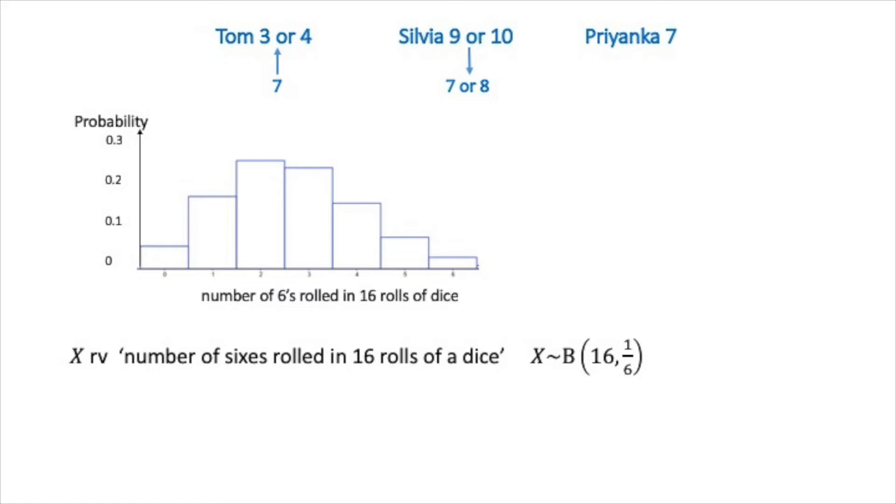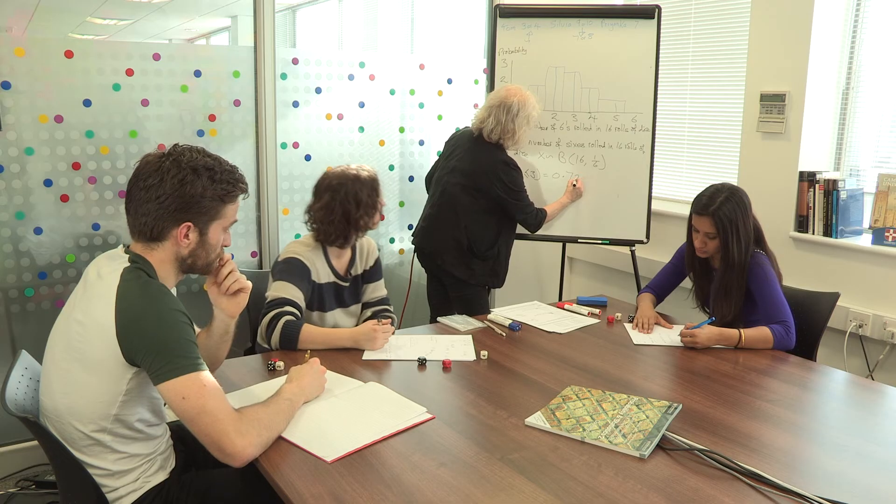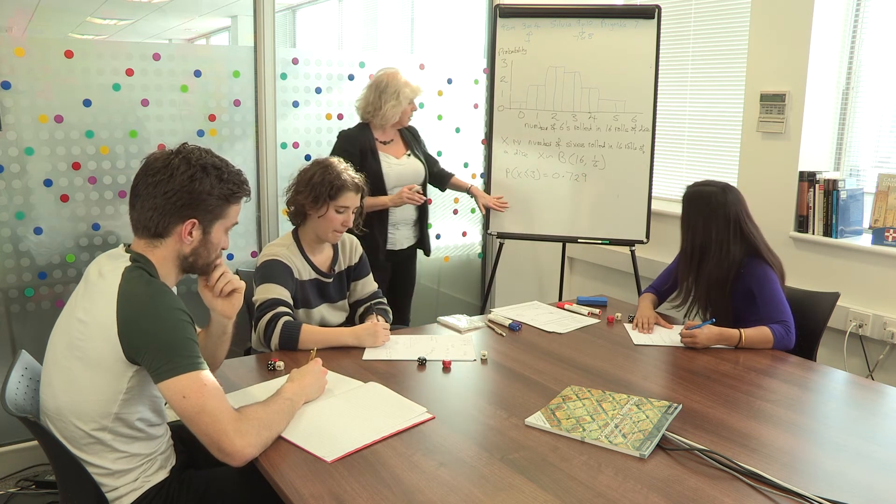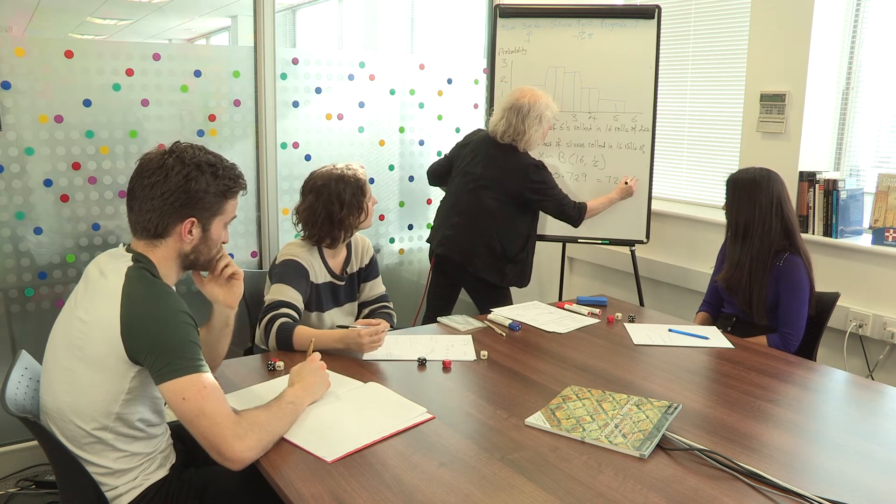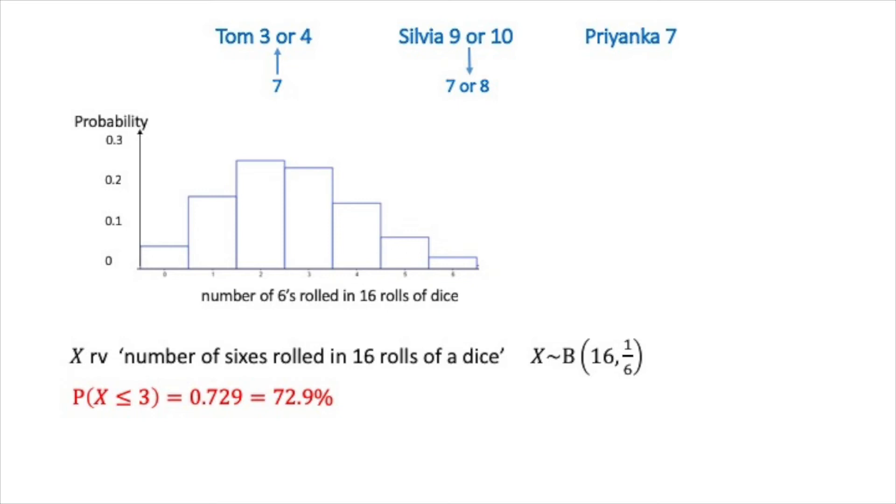So, if we look at the probability that x is less than or equal to 3, and you will remember how to do this from probability and statistics 1, so I'm not going to do it here, but you actually get 0.729. So, what is that telling us? Well, if we wrote that out as a percentage, we would have 72.9%. So, in nearly 73% of times that you will roll this, you will get 3 or fewer sixes coming up. So, that's quite a lot of the time you will naturally get 3 or fewer.